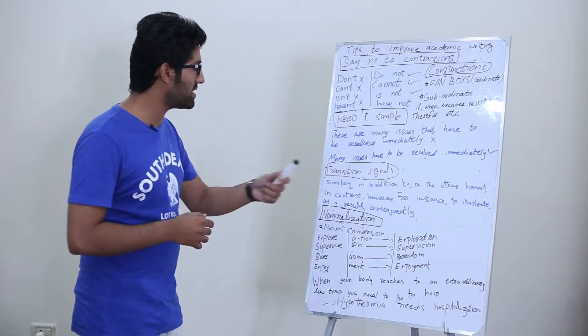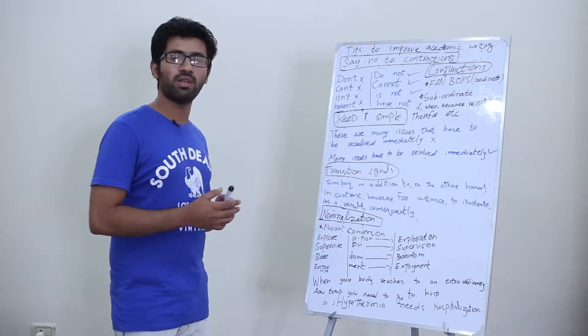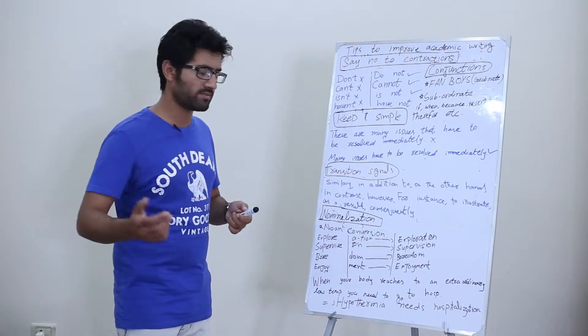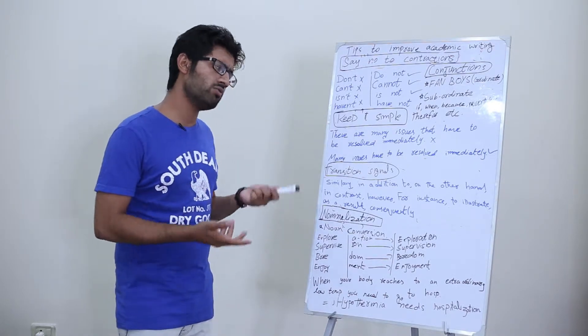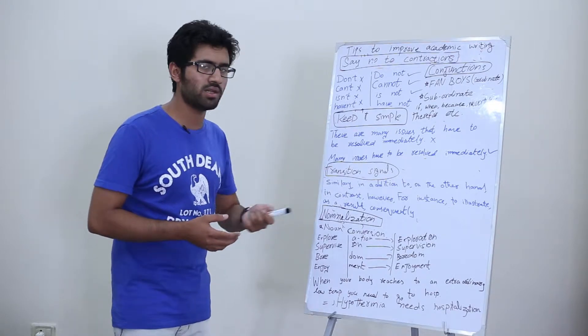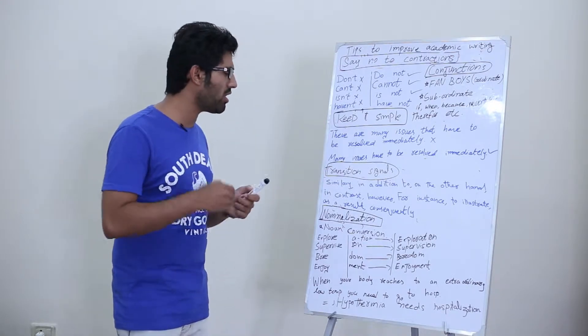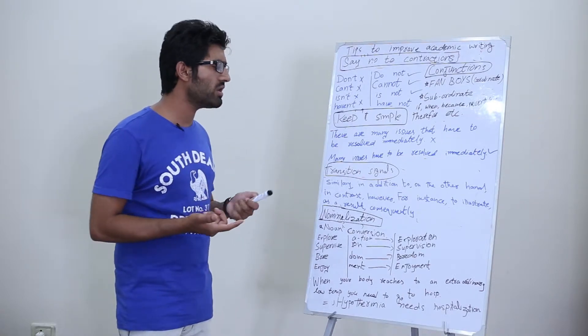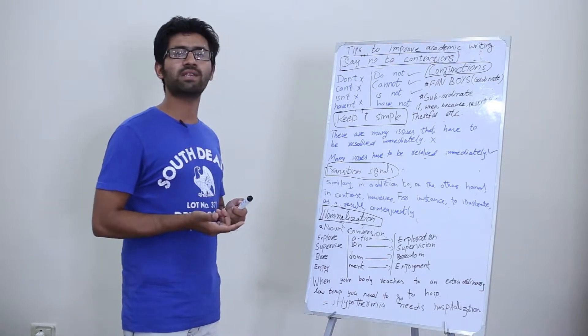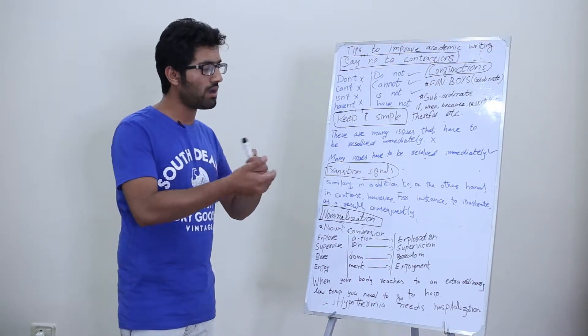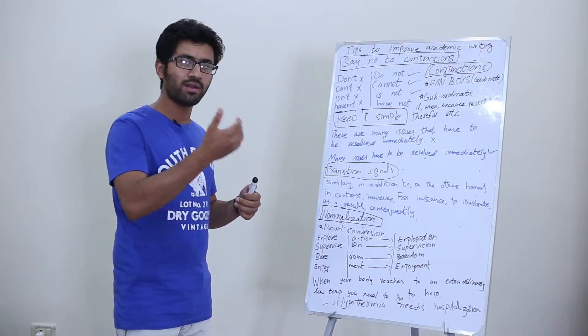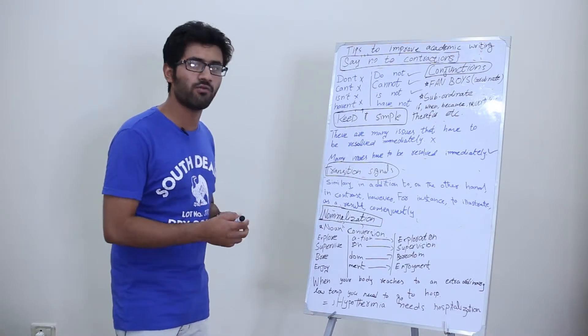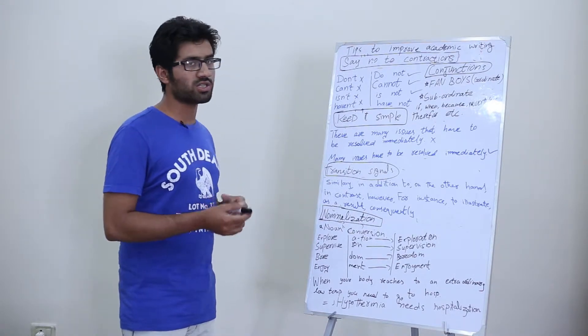There are a few transition signals you have to understand and their uses as well. 'Similarly' is used when you are giving a similar idea in the next piece of your writing. 'In addition' has the same use as similarly. 'On the other hand' when you are giving the opposite or different idea. 'In contrast' is similar to on the other hand. 'However' is also similar to in contrast. 'For instance' when you are going to give an example, so the reader will understand that there is an example coming to illustrate. 'As a result' when you're giving a result of something. 'Consequently' is similar to as a result.